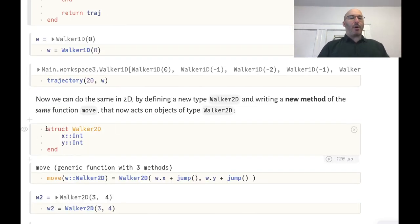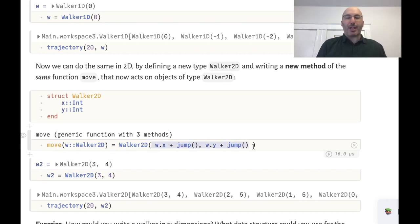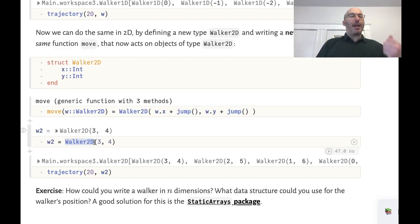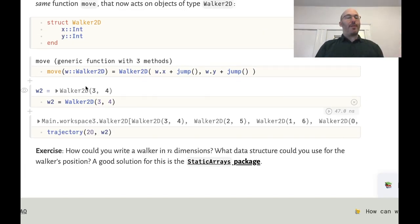And similarly if we want a two-dimensional walker all we need to do is define the walker object and how it will move. In this case we're just jumping in each separate direction. The initialization is actually coming from calling the constructor to initialize the object. And when we run trajectory of 20 with this w2 object we see that indeed we have the trajectory of a two-dimensional random walker.